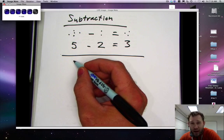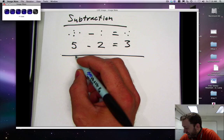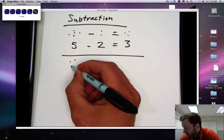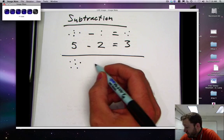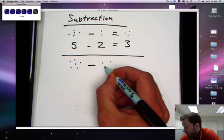Let's try another example. One, two, three, four, five, six. Minus one, two, three.